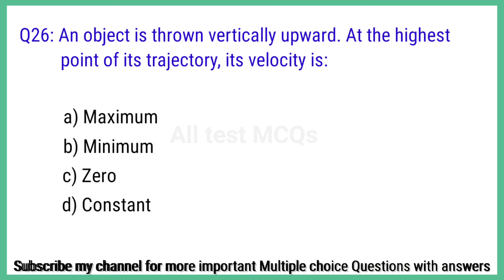Question number 26. An object is thrown vertically upward; at the highest point of its trajectory, its velocity is? The right answer is option C: Zero.